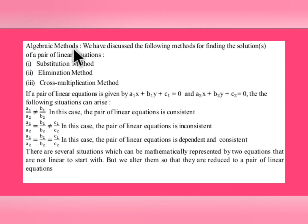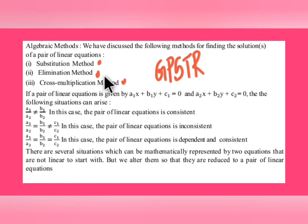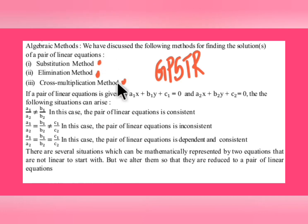For finding the solution of pair of linear equations, there are three algebraic methods: substitution method, elimination method, and cross multiplication method. In case of GPS tier since it has descriptive type, they may mention the method and ask you to find the solution. In the last GPS tier exam, the cross multiplication method was asked. For TET you can use any method. For GPS tier exams I will explain all three methods in detail.